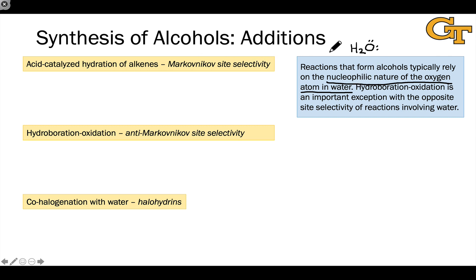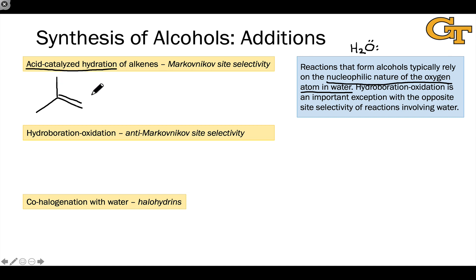Within the category of addition reactions, we find reactions of alkenes where the elements of water — H and OH — add across the alkene. The first is acid-catalyzed hydration, and this exhibits what we call Markovnikov site selectivity. You've probably seen this reaction before in your Organic One course, and Markovnikov site selectivity is based on the stability of the carbocation.